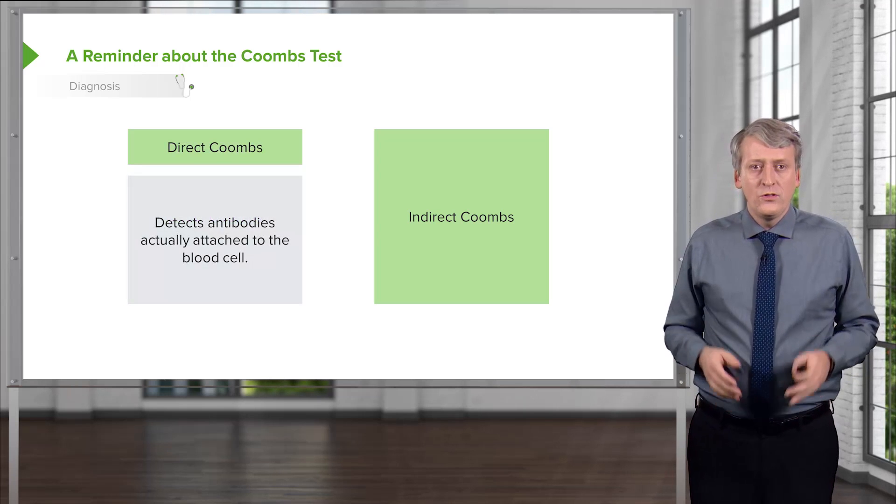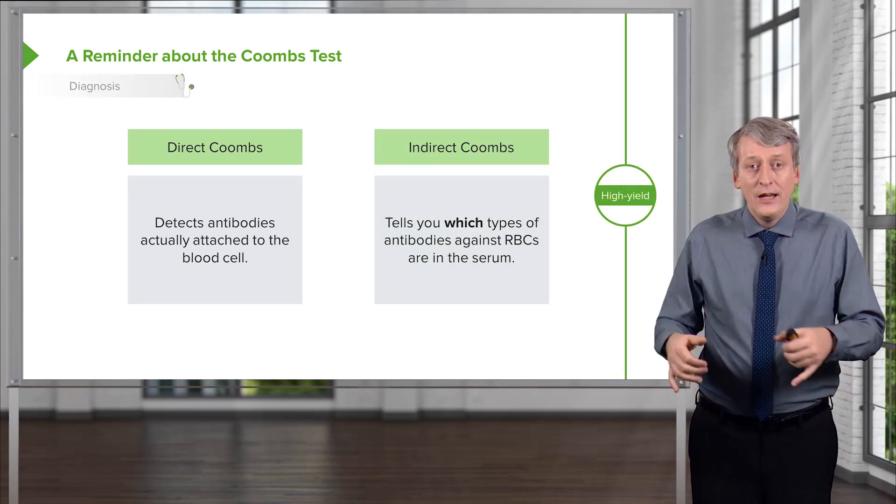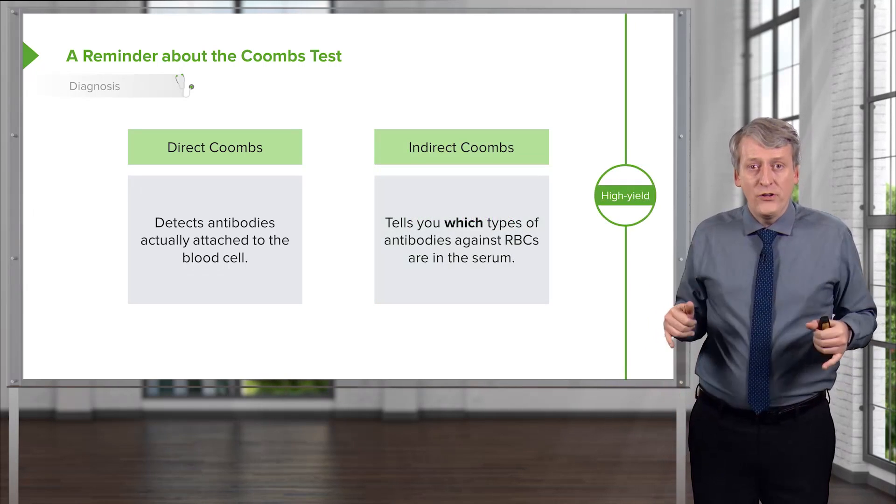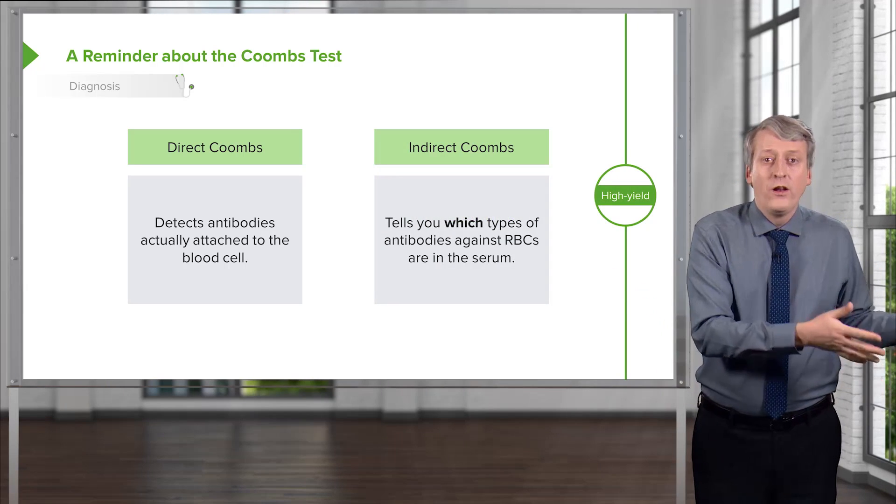The direct Coombs test is for antibodies that are actually attached to the blood cell right now, and the indirect takes the antibodies out of the patient, leaves their own red cells in the dish, and then we look at those antibodies and see what are they attacking.